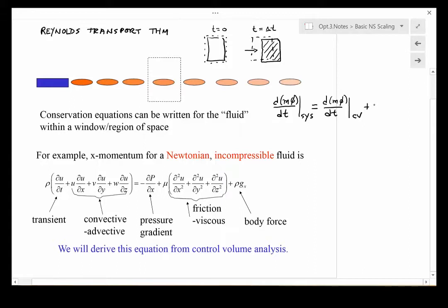Plus the stuff that went out of the control volume—m dot is mass flow rate—minus the stuff that came into the control volume.